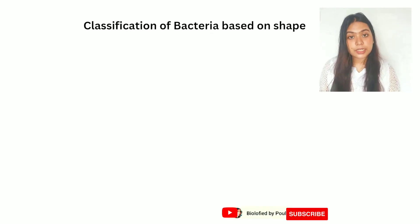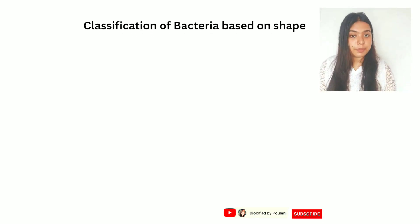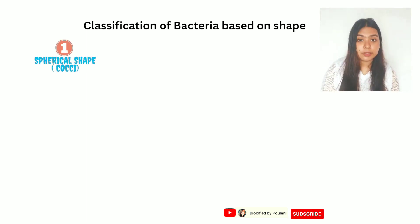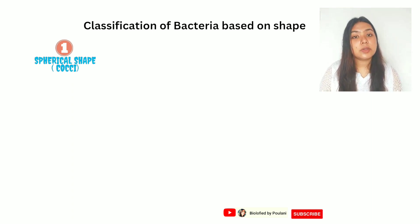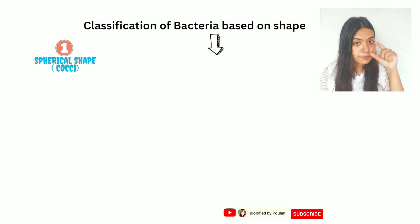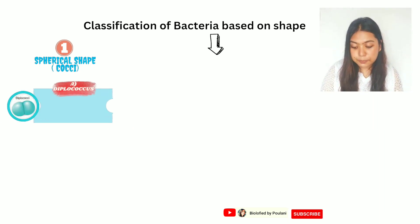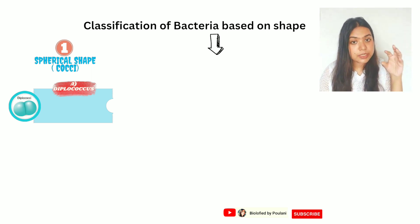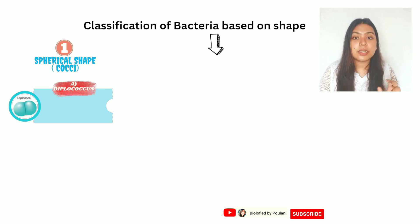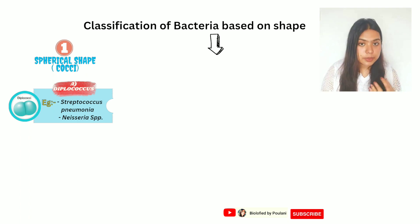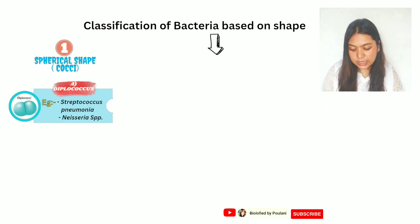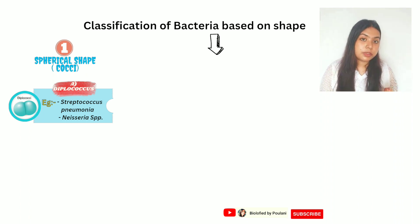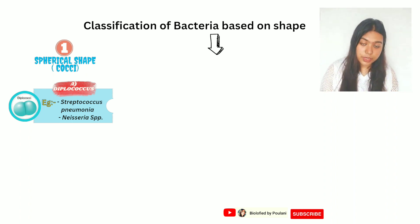The classification based on shape and arrangement of bacteria: first, spherical-shaped bacteria — the cocci. Diplococcus is arranged in pairs and is known to cause pneumonia in humans. Neisseria is another important genus — Neisseria gonorrhoeae causes gonorrhea in humans, which is again a sexually transmitted disease.